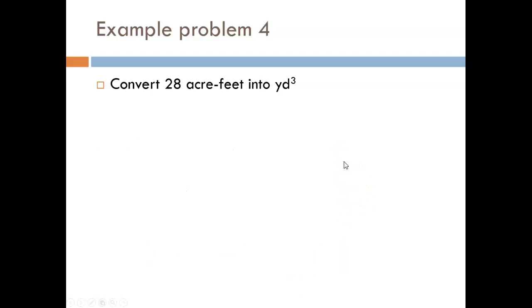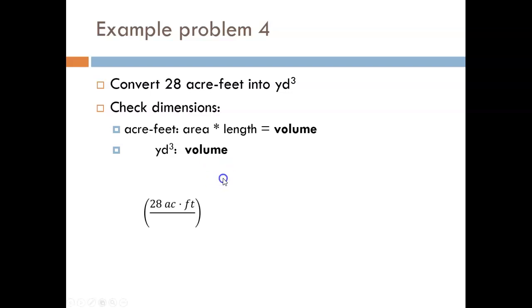And now we get to our last example of this lesson. Convert 28 acre feet into yards cubed. Let's make sure we don't have the same situation as the previous example. Do the dimensions match up? Even though it may sound strange, acre feet means an acre of area multiplied by a foot of length. An area times a length gives us a volume. And our goal is to convert into yards cubed, which is a measure of volume. So, this problem can be done. My approach is shown here. First, note that I write acre feet as acre times feet. It is not a subtraction operation like the original writing suggests.